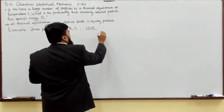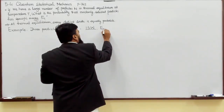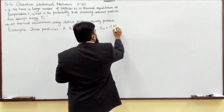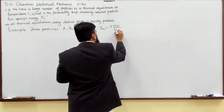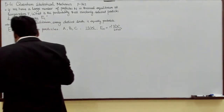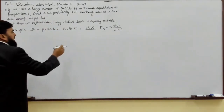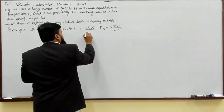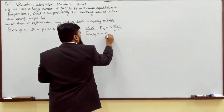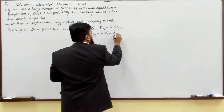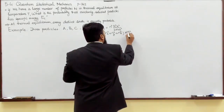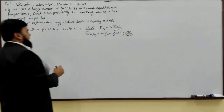Let's say the particles are in an infinite square well. We know the energy formula: E_N = N² ħ² π² / (2mA²), where A is the width of the well. In three dimensions, for quantum numbers N_x, N_y, N_z, the energy becomes E = (N_x² + N_y² + N_z²) × π² ħ² / (2mA²).